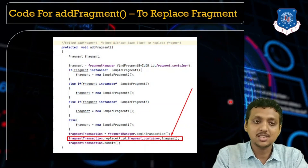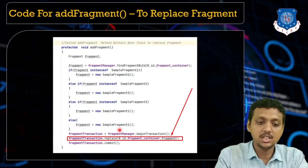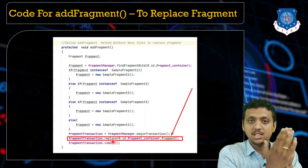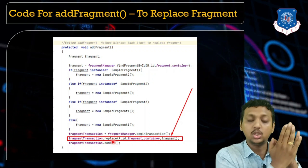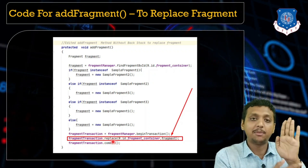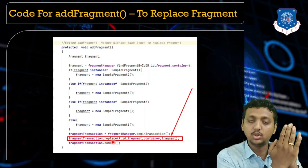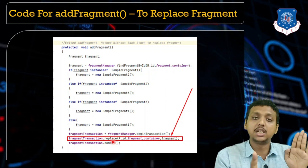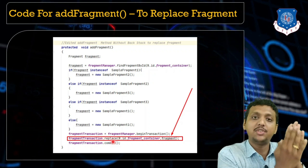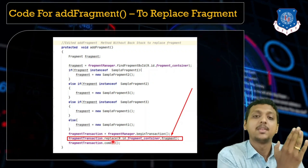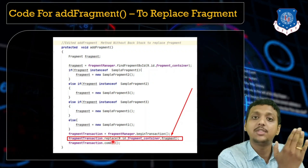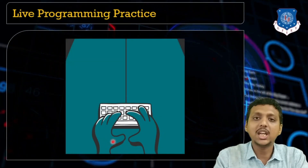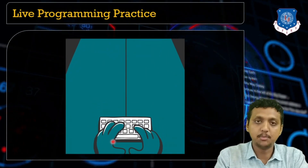To replace a fragment, you just need to change the method from add to replace. With the add method, fragment 1 stays, fragment 2 is added on top, then fragment 3 is added on top of that. But with replace, when you click add, fragment 1 is gone and only fragment 2 is there. Click again — fragment 2 is gone and only fragment 3 is there. This is how the replace method works.